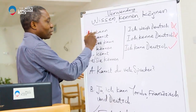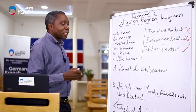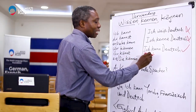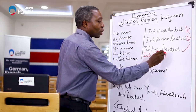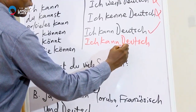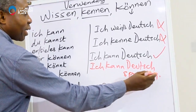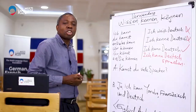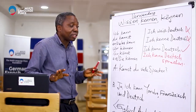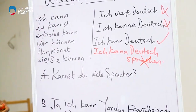We see 'ich kann' — just as you can see here — 'ich kann Deutsch.' Of course, it is correct to say 'ich kann Deutsch sprechen,' and that is perfectly correct, but it's not necessary. You just say 'ich kann Deutsch' and you leave out 'sprechen.' 'Ich kann Deutsch.'